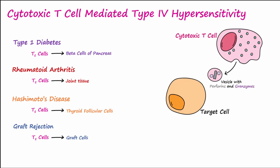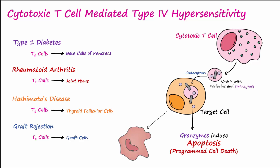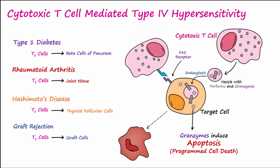In these cases, target cells are recognized by cytotoxic T cells, which then release a vesicle containing a perforin-granzyme complex that the target cell takes in through endocytosis. The perforins allow granzymes to be released from the complex. Granzymes are proteases that induce apoptosis, or programmed cell death, of the target cell. A cytotoxic T cell may also bind to a Fas receptor expressed on a target cell using a Fas ligand, which also activates apoptotic cell death.